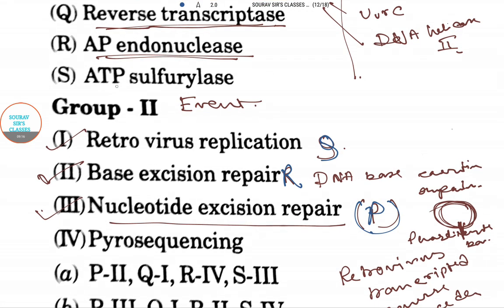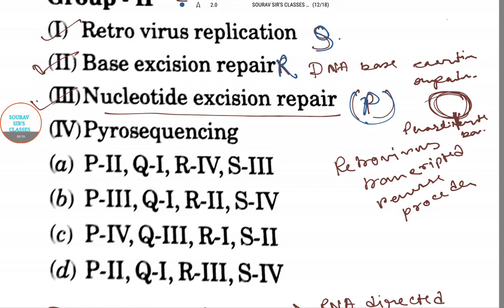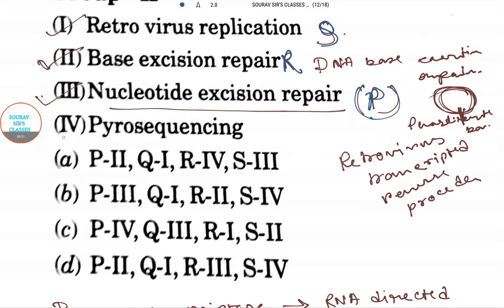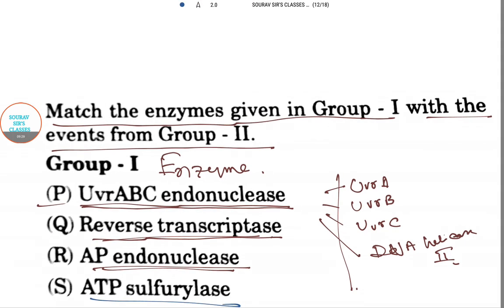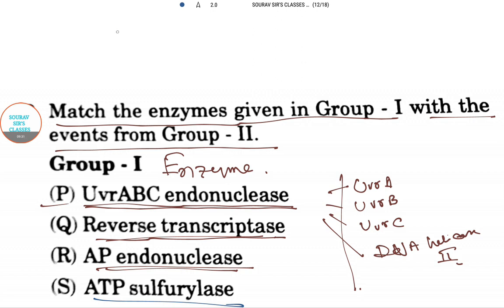Now the last one is ATP sulfurylase. Obviously it will be pyrosequencing, but we should know in detail that pyrosequencing is a method of DNA sequencing.